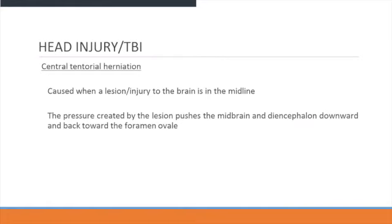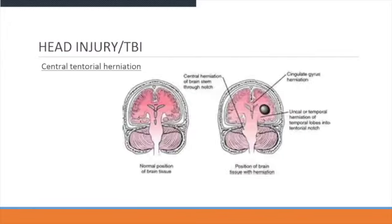Central tentorial herniation is caused when a lesion or injury to the brain is in the midline. The pressure created by the lesion pushes the membrane and the diencephalon downwards and back toward the foramen magnum. As shown in the illustration, you can see the normal position and then the herniation shifting the brain into the foramen.